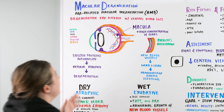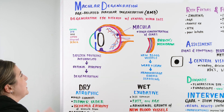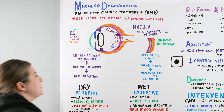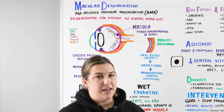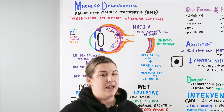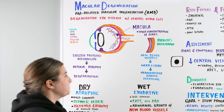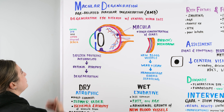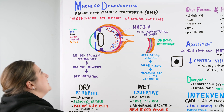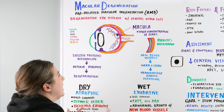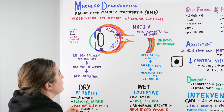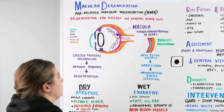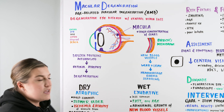Macular degeneration — this is age-related macular degeneration, also commonly referred to as AMD or ARMD. Macular degeneration is a degenerative eye disease in which we have a loss of our focal center vision. Our central vision is lost.